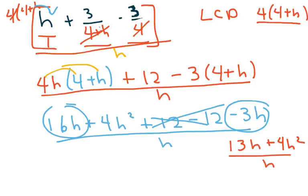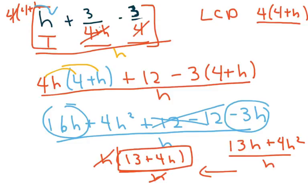I'm going to bring it over here now. Factor out an h, and I get 13 plus 4 h over h. This cancels, and so my answer is going to be 13 plus 4 h, right?